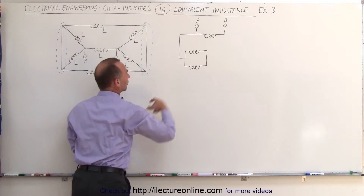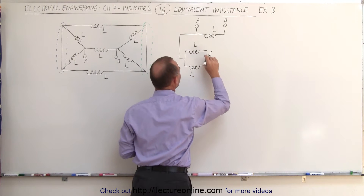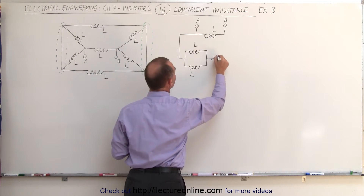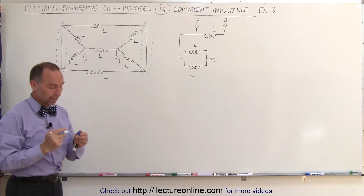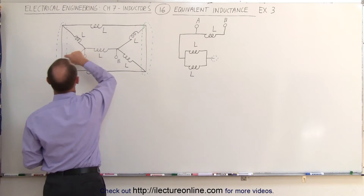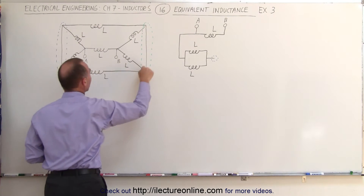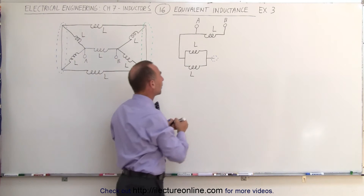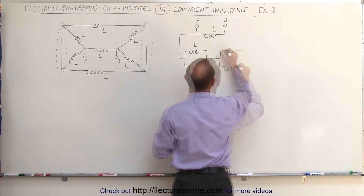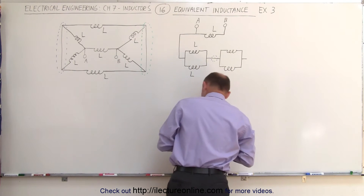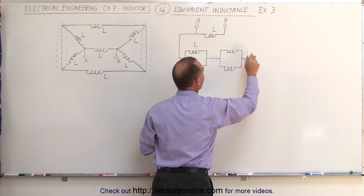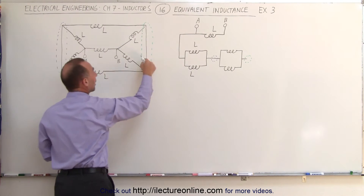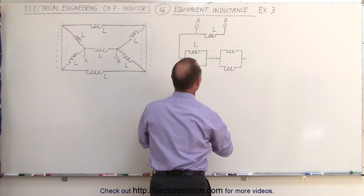These two inductors here correspond to those two inductors there. All of these are of course inductance L. This point right here is a single branch point, and this point right here is the same as this point right there. Going from here to here, we can either go through the inductor at the top or through the inductor at the bottom, which means again we have a branch point — two paths to get to this branch point. We can draw it as follows, coming together down to a single branch point. Again, we have a set of inductors in parallel.